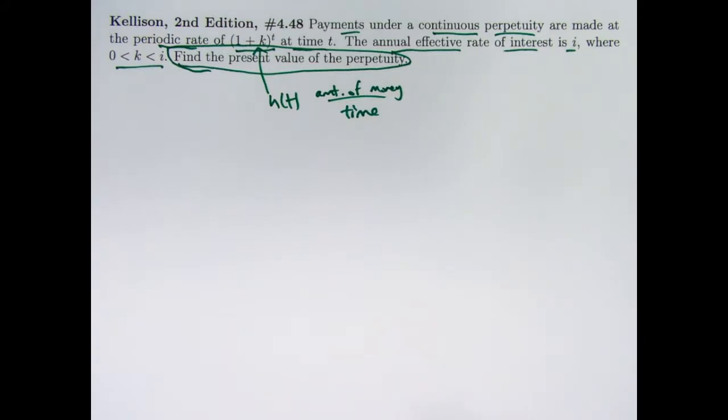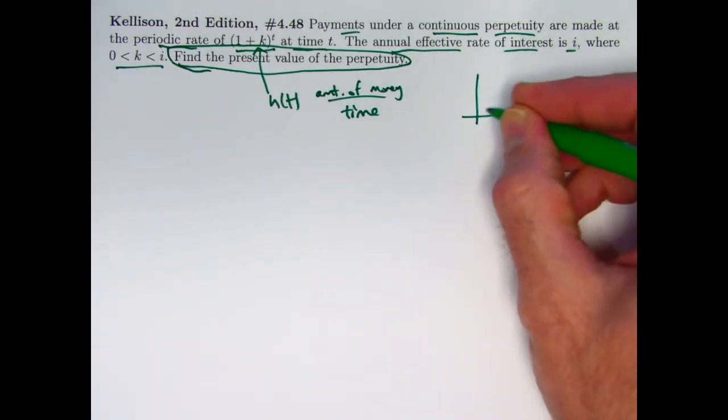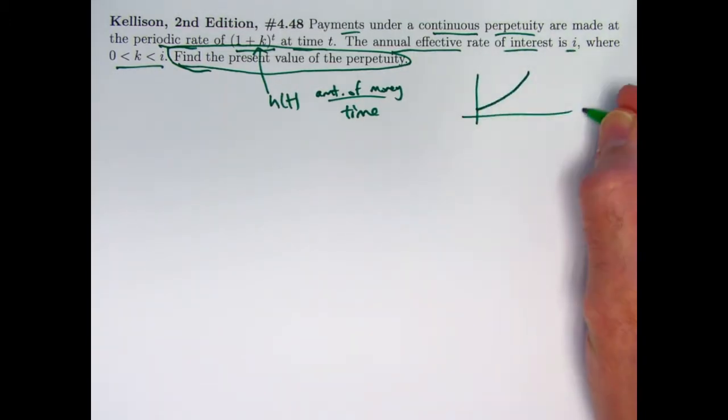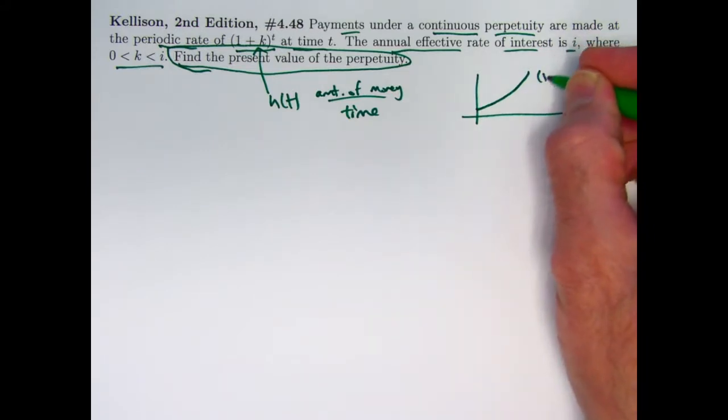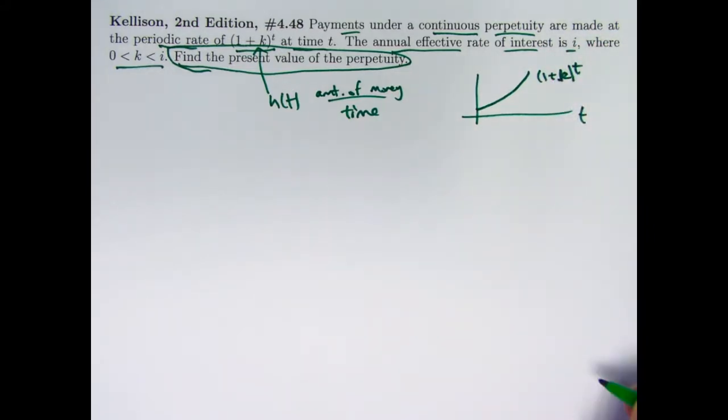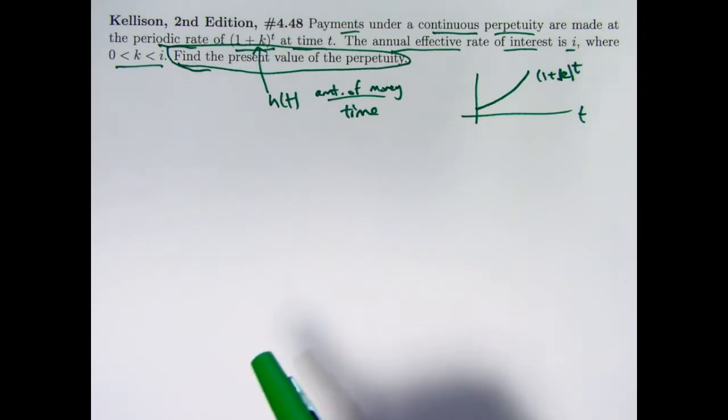This function is measuring the percent rate of change of growth of your money, because k is going to be less than i. In fact, k does have to be less than i in this case for this perpetuity that goes on forever to have a finite present value. You are getting money at a faster and faster rate. If you graphed 1 plus k to the t power as a function of t, you get an increasing and concave up graph. But because the interest rate i is bigger than k, this will have a finite present value when we discount it.